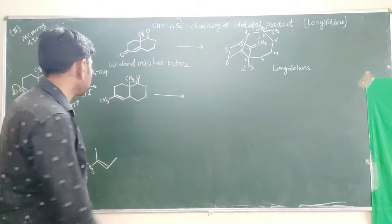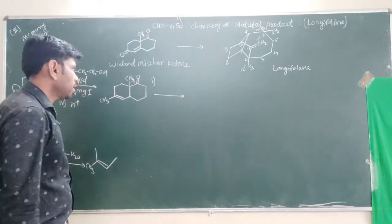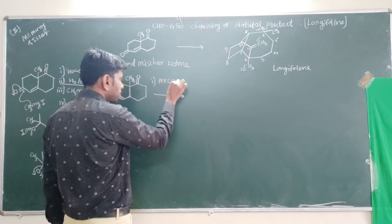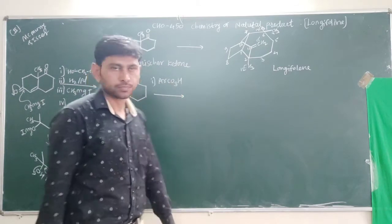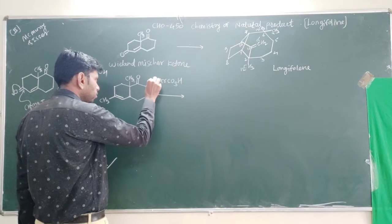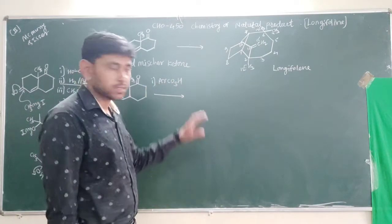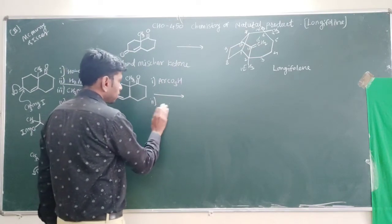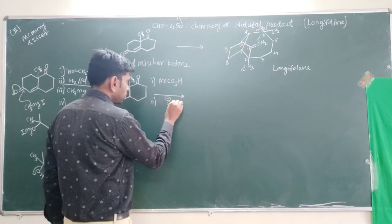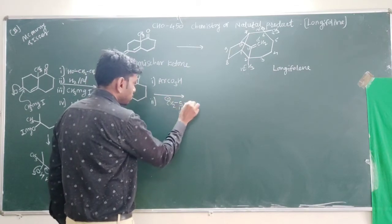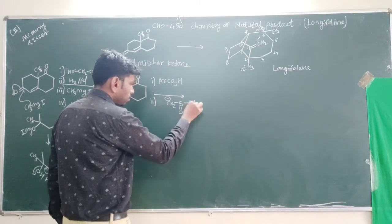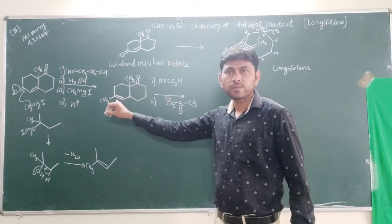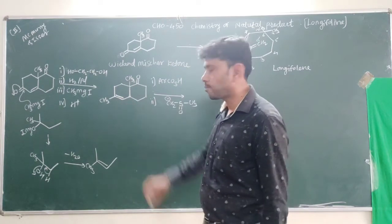In the second step, the double bond that is present is epoxidized by using the peracid (ArCO3H, a peroxy acid). The role of the peracid is to form the epoxide across this double bond, so epoxide formation takes place.